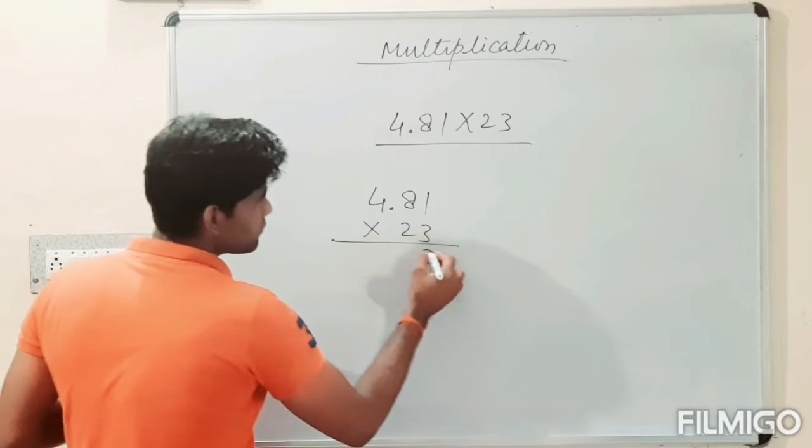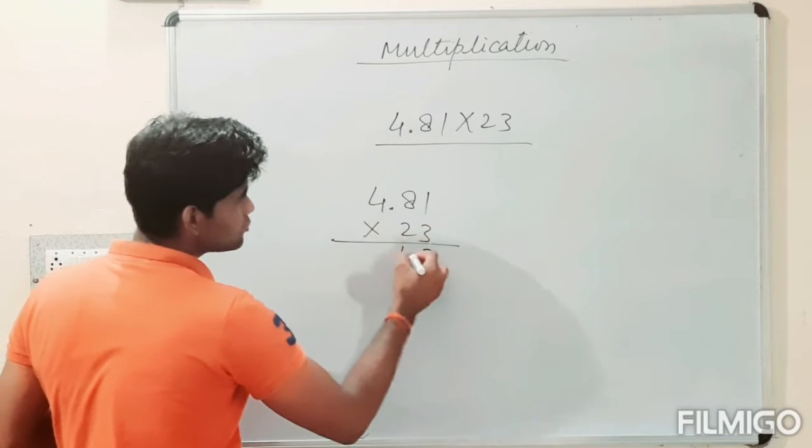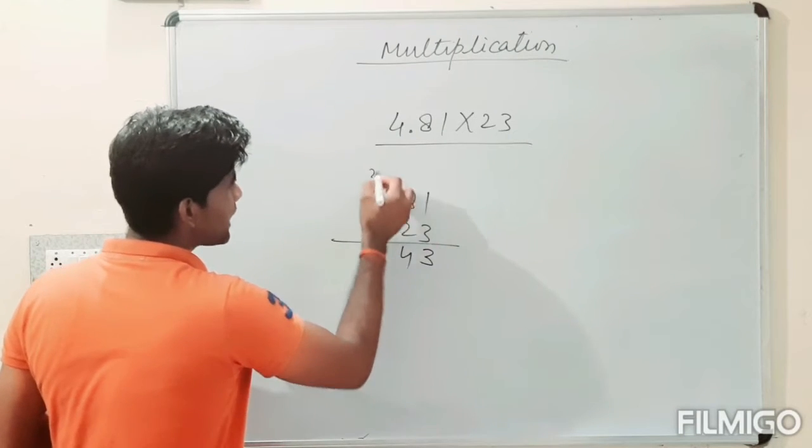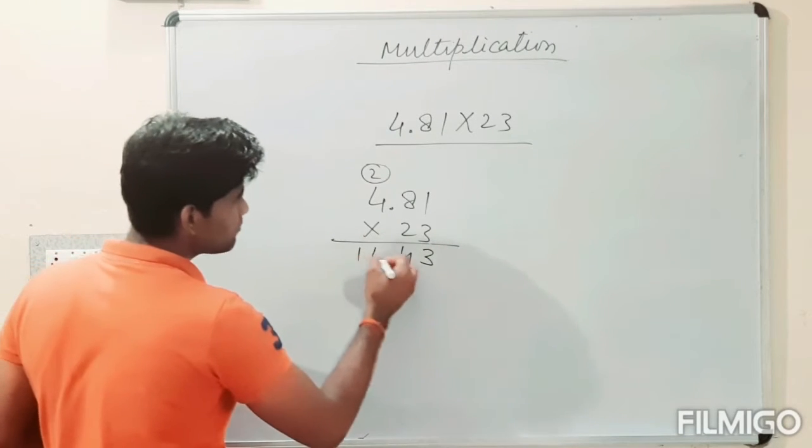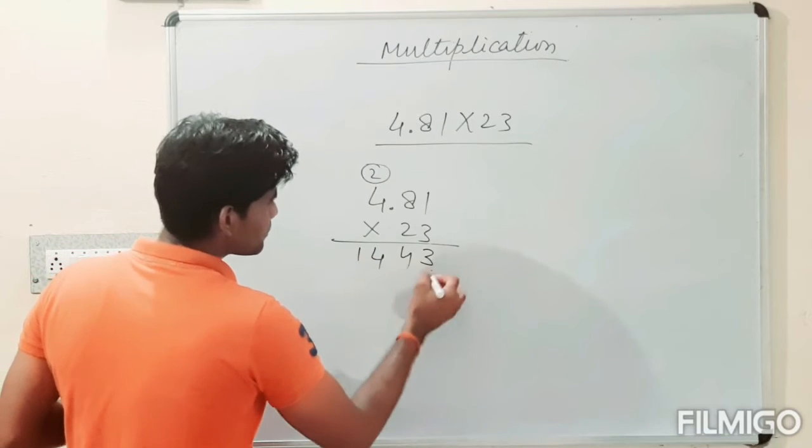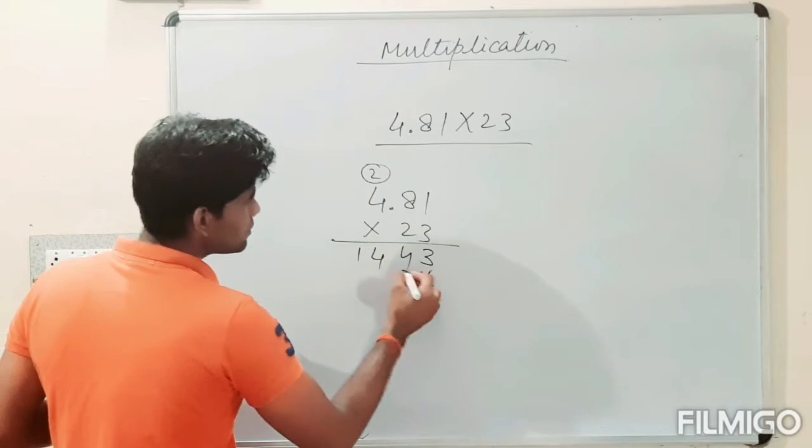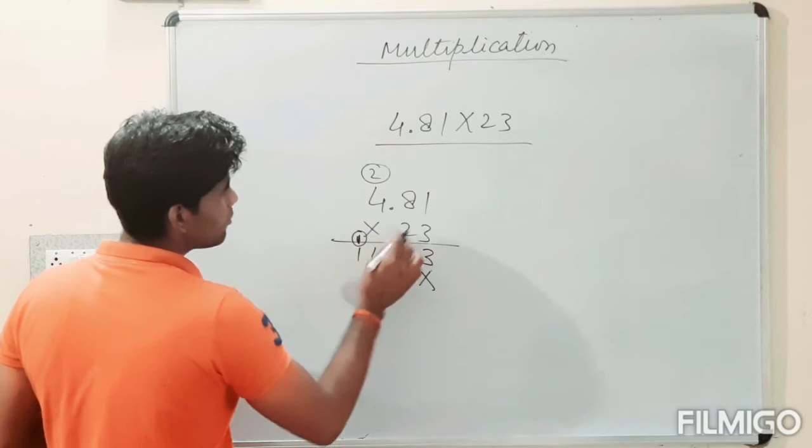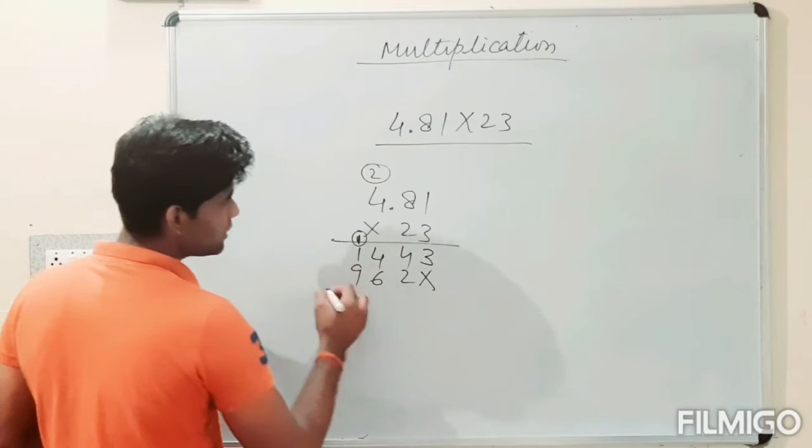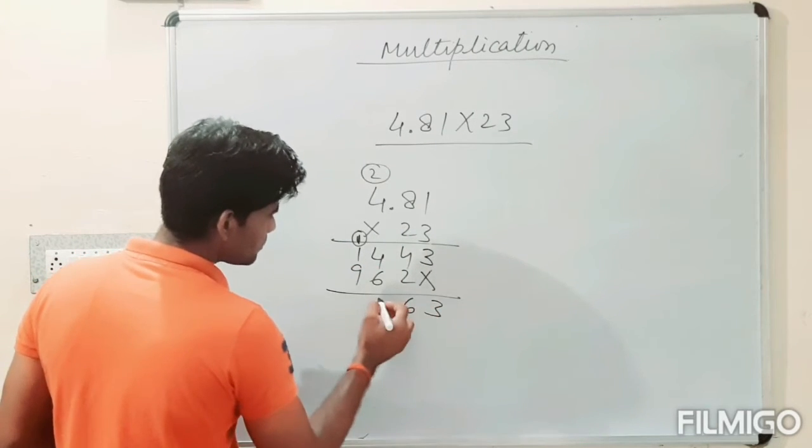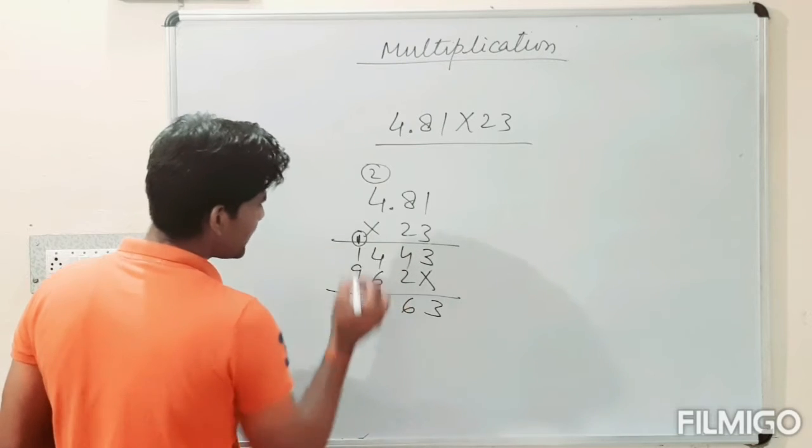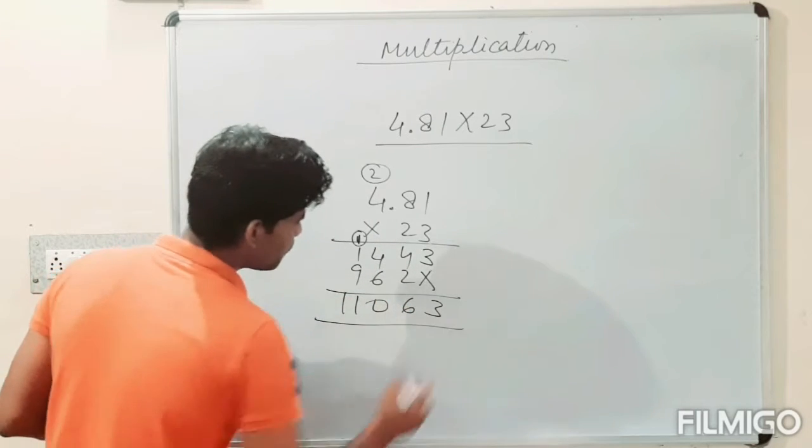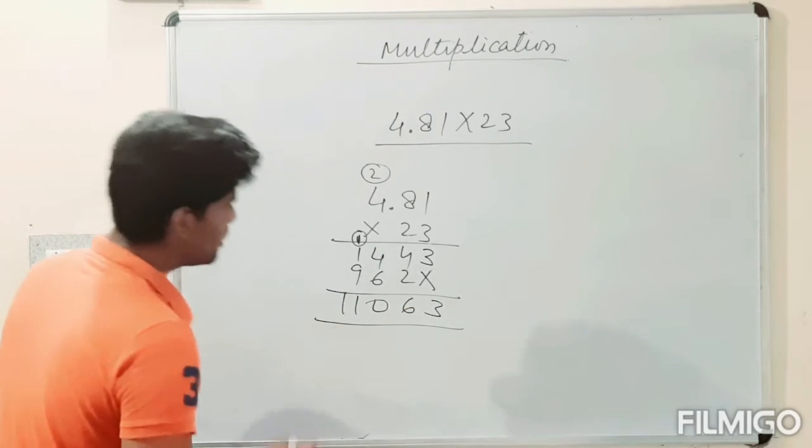3 times 3, 8 times 3, 24 and carry 2. Then 4 times 3, 12, plus 2 is 14. Then 2 times 2, 8 times 2, 16 carry 1 here. 4 times 2, 8 plus 1, 9. We will get 6, 10 carry 1. That is 1, 1, 0, 6, 3.